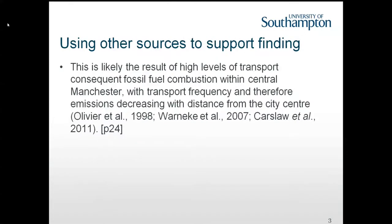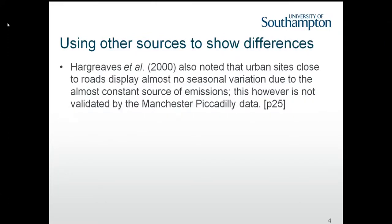Here we've got an extract from a student's piece of writing to show when she's using sources to support her finding. She writes: 'This is likely the result of high levels of transport consequent fossil fuel combustion within central Manchester, with transport frequency and therefore emissions decreasing with distance from the city centre.' As you can see, she's included in brackets a number of other writers who've had the same finding. In another place, however, she does mention sources that show different conclusions or had different findings.